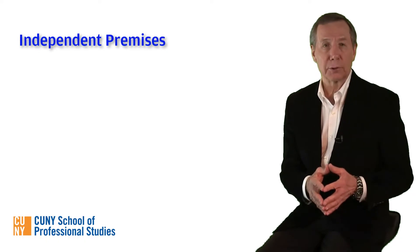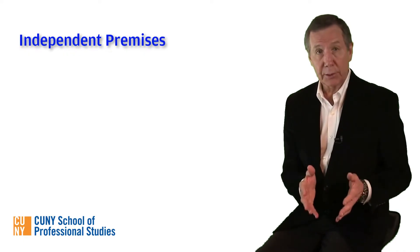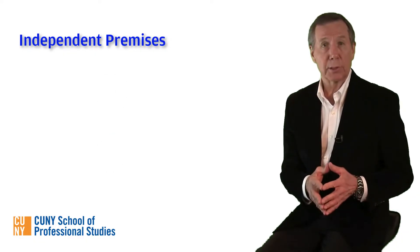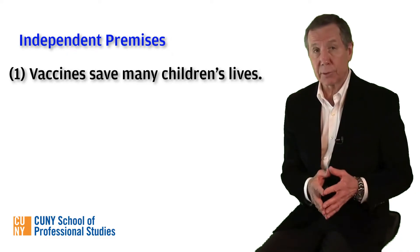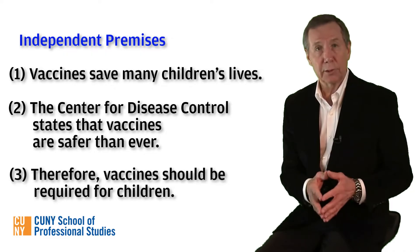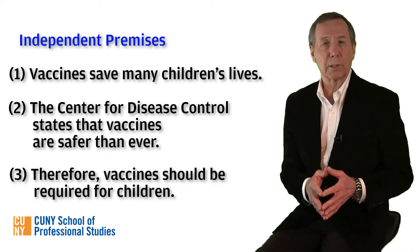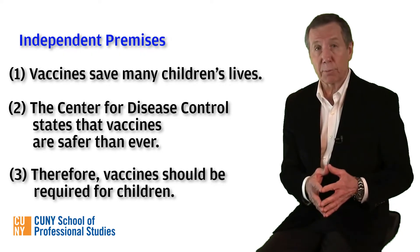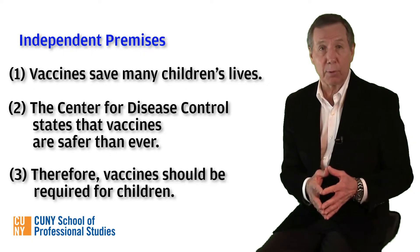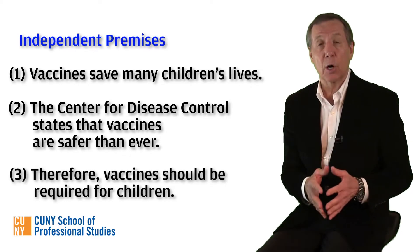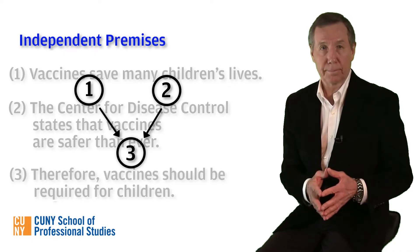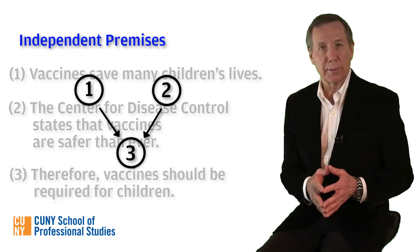Often, different premises will support a conclusion or another premise individually, without help from any others. When this is the case, we draw an arrow from the circled number representing that premise to the circled number representing the proposition it supports. Consider this simple argument: Proposition 1 — vaccines save many children's lives. Also, Proposition 2 — the Center for Disease Control states that vaccines are safer than ever. Therefore, Proposition 3 — vaccines should be required for children. The last proposition is clearly the conclusion, as the word 'therefore' indicates. The first two propositions provide backing for it, so they are the premises. They support the conclusion independently, which means that each of the premises would still provide support for the conclusion even if the other were not true — each, on its own, gives us an independent reason for believing the conclusion. Consequently, we'll diagram the argument as follows. As you can see, the separate arrows indicate the self-sufficiency of the premises that support the conclusion. The premises are independent, as our diagram shows.